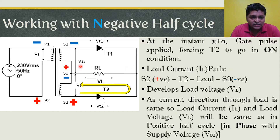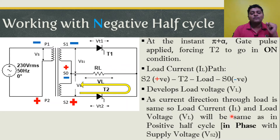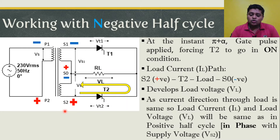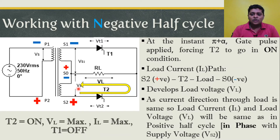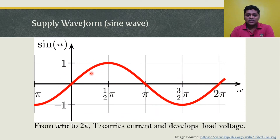As soon as T2 turns on, it produces load current along the path S2→T2→R_L→S0. Load voltage is developed. The key point is that during the positive half cycle the current flows from A through R_L to B to S0, and during the negative half cycle it also flows from A through R_L to B to S0 — the direction through the load is the same in both half cycles. So we again get a positive voltage and positive current across the load, with load current and voltage in phase with the lower secondary supply voltage.